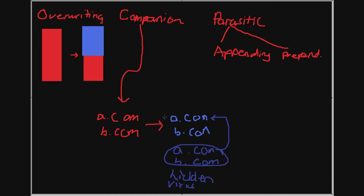If the user were to see the A.com and B.com files, she would immediately delete them. That would be bad because those are the host files — without a host, when you run the virus it won't transfer anywhere. The extension might look awkward and the user would delete it, actually deleting the host. That's why companion viruses are more conspicuous than parasitic but less conspicuous than overriding viruses.